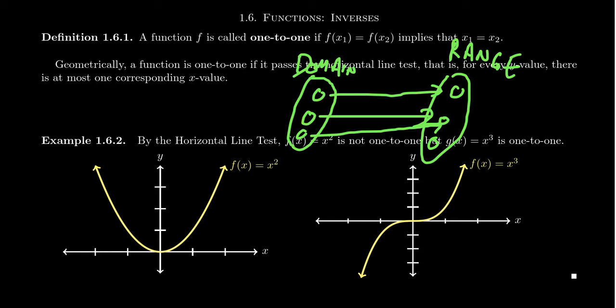Now, for a function being one-to-one, we are going to require that each y-coordinate has only one arrow pointing to it. So something like this. And this is why we call it one-to-one, is that everything in the domain corresponds to one thing in the range. And everything in the range corresponds to one thing in the domain. There's this one-to-one correspondence between the elements of the domain and elements of the range here.